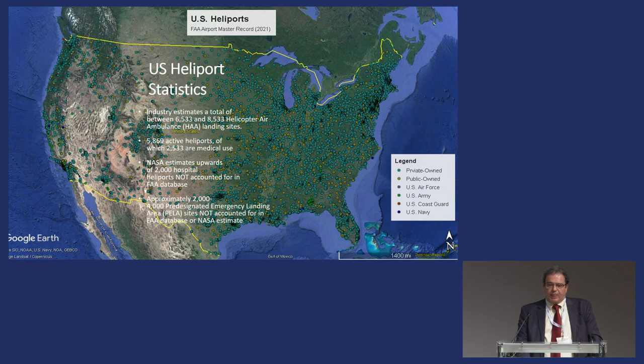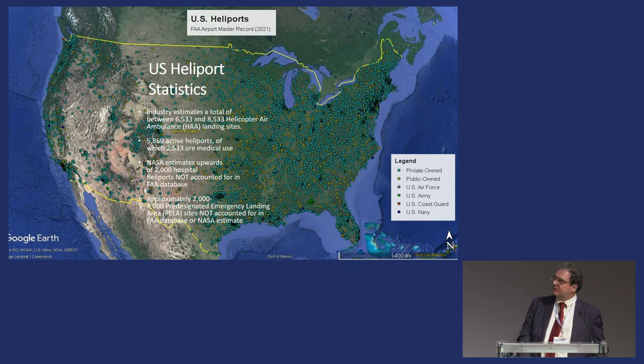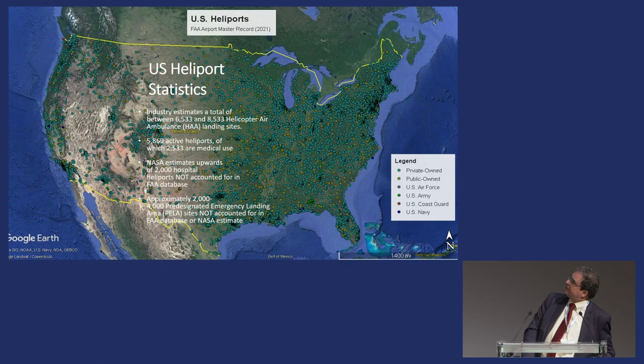Some statistics with the help of John Shea from HAI: if you're wondering how many heliports and helipads in the US can be affected by NOTAMs, every dot on this map is either a private, public, US Army base, or ambulatory landing site for helicopters — a quite impressive and dense distribution across the country.